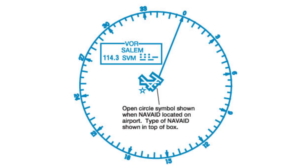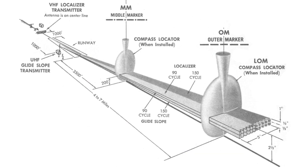A VOR on a chart looks something like this. In this case, this is the Salem VOR. The frequency is 114.3, and it tells you what Morse code you should hear in your headset. This is the ILS, or instrument landing system. If you fly it correctly, it's like flying a pipe. They typically have an outer marker and a middle marker.